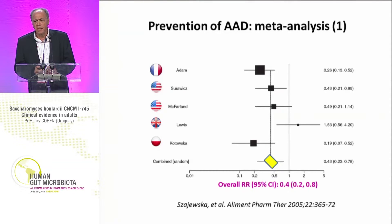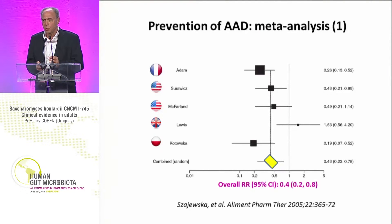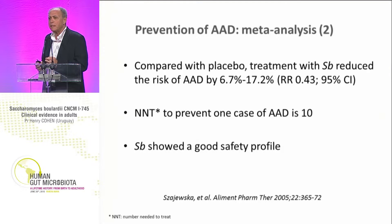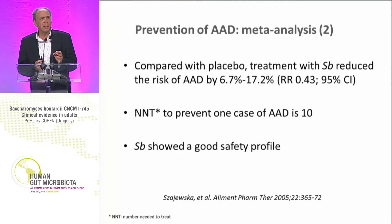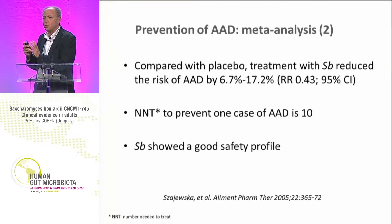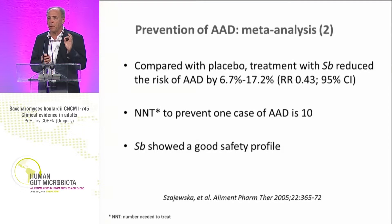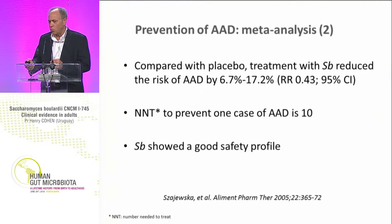This is a meta-analysis — a more recent meta-analysis from Szajewska — where we see that almost all works favor the use of Saccharomyces boulardii to prevent AAD, with an overall relative risk of 0.4. Extending the information of this meta-analysis, treatment with Saccharomyces boulardii compared with placebo reduced the risk of antibiotic-associated diarrhea from 17.2% to 6.7%, with a relative risk of 0.43. The number needed to treat was calculated, and Saccharomyces boulardii showed a very good safety profile in this meta-analysis.